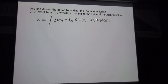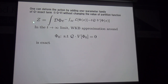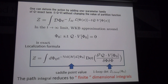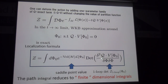Here T is a real parameter, and the Q-exact term is a term expressed as a supersymmetric transformation of some local operator; Q is one of the supercharges. The statement of localization is: in the T→∞ limit, the saddle-point approximation around the zero locus of QV is exact. The partition function reduces to a path integral over the zero locus, with the integrand consisting of the saddle-point value of the original Lagrangian and the one-loop determinant of QV. This reduces the infinite-dimensional path integral to a finite-dimensional integral — a great simplification.